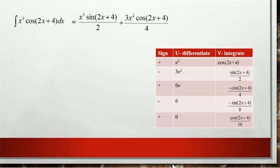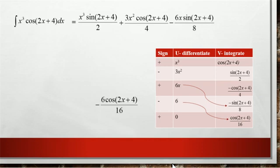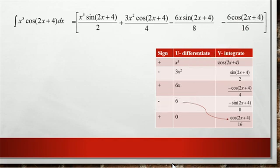The next step is again we can take the plus 6x with minus sin 2x plus 4 divide 8. So it is going to be minus 6x sin 2x plus 4 divide 8. That we can add with the previous two terms. And the last term is minus 6 with cos 2x plus 4 divide 16. So together all these four terms makes the solution for this integration.